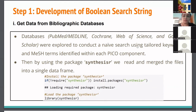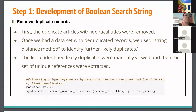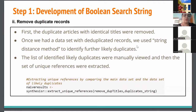We used synthesisr to get all the naive search results — downloaded as .bib or .ris files — and merge them into one single data frame. The next important task was to remove all duplicate records. The first step in removing duplicates was to check for identical titles using synthesisr functions. Once we had the deduplicated dataset, we used the string distance method to identify further likely duplicates.